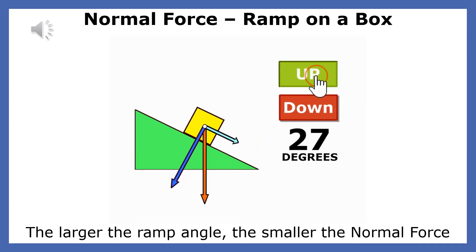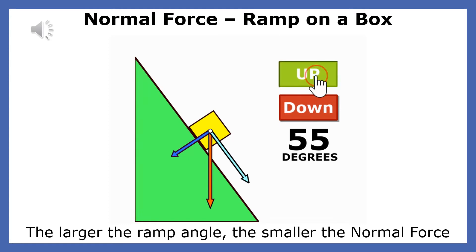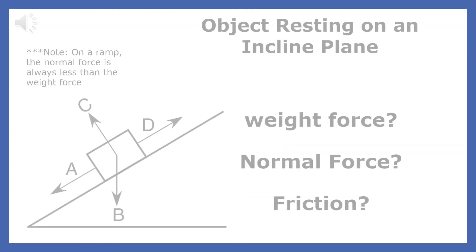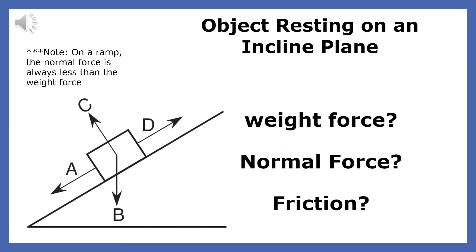The smaller the ramp angle, the larger the normal force. Looking at the forces acting on a box placed on a ramp: Force B points straight down, so it is the weight force. The normal force is the supporting force that the ramp exerts on the box — C is the normal force.